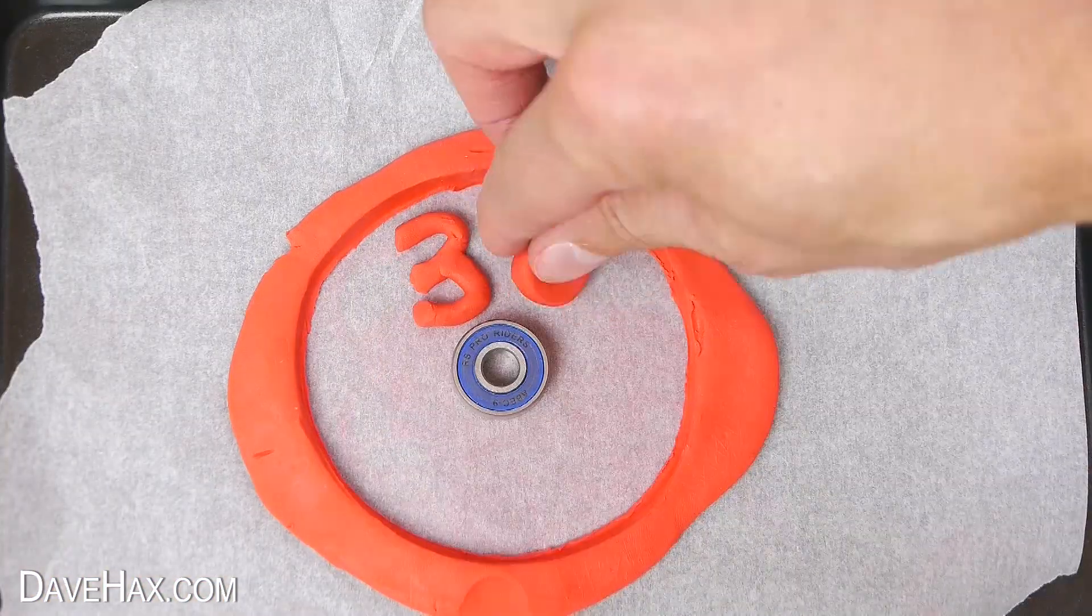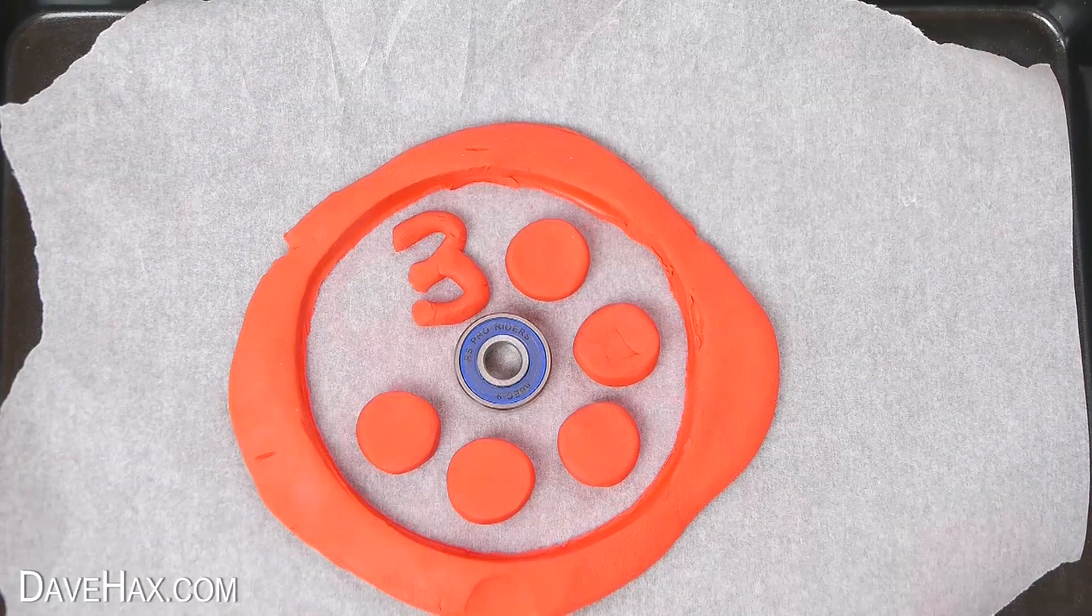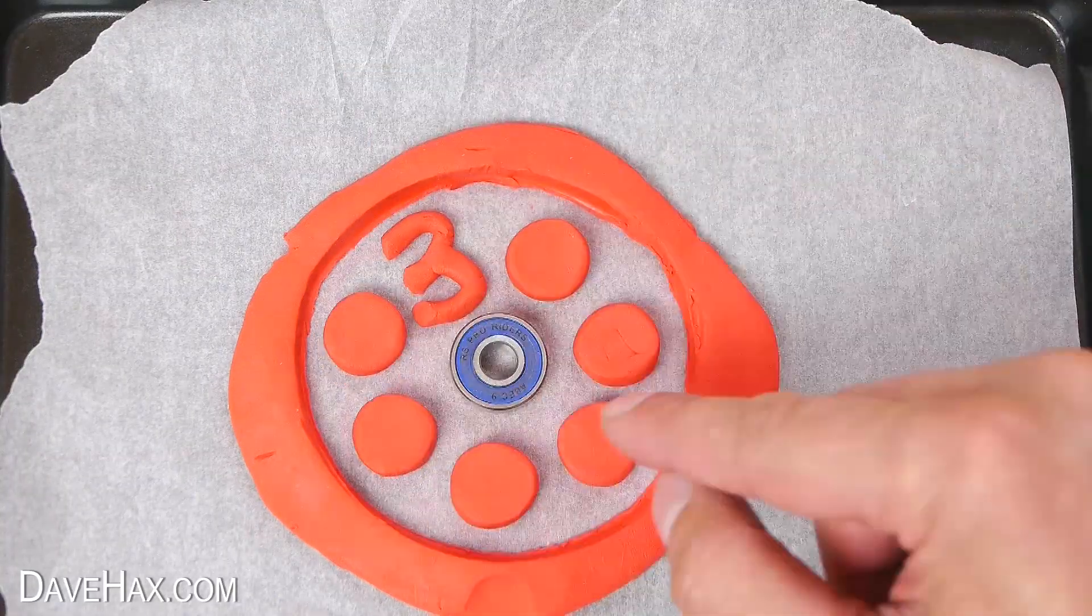Then I carefully arranged the numbers all the way around the mould in a circle and I tried to make the spacing as even as possible to make it well balanced.